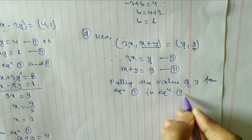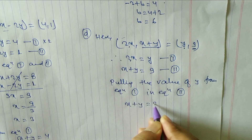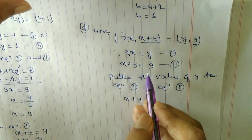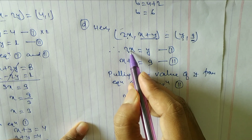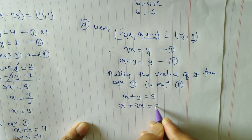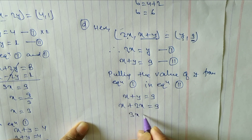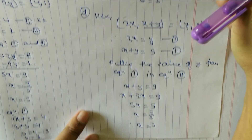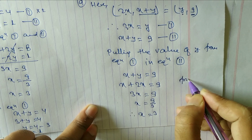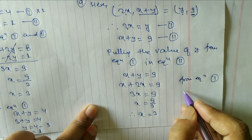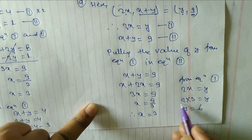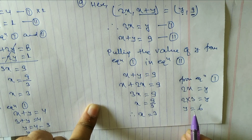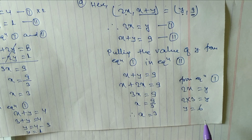Substituting y = 2x into equation 2: x + 2x = 9, so 3x = 9, x = 3. From equation 1: y = 2x = 2 × 3 = 6. Therefore x = 3 and y = 6. Hope you understand question number 1d.